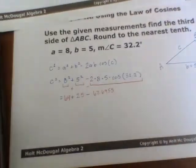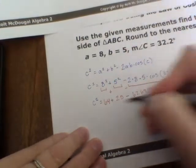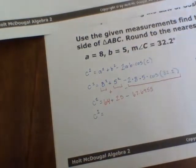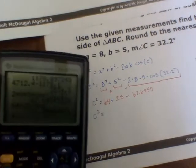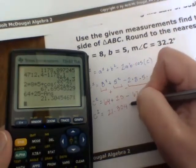So in order to get our C squared, we're going to have to combine each of these pieces together. So 64 plus 25 minus that 67.6955 leaves you with 21.3045.